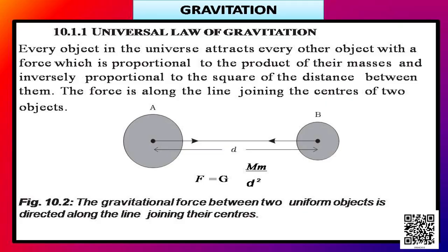From all these facts, Newton concluded that not only does the earth attract an apple and the moon, but all objects in the universe attract each other. This force of attraction between objects is called the gravitational force. Let us discuss the universal law of gravitation: every object in the universe attracts every other object with a force which is proportional to the product of their masses and inversely proportional to the square of the distance between them. The force is along the line joining the centers of the two objects.